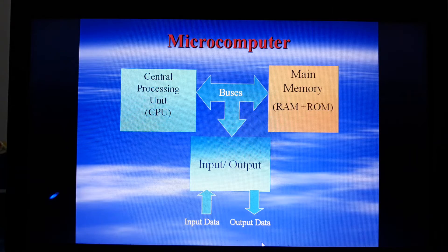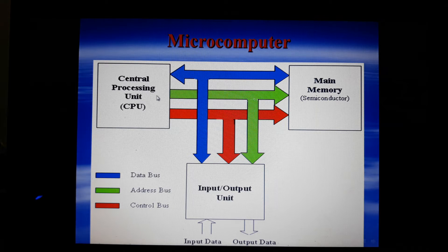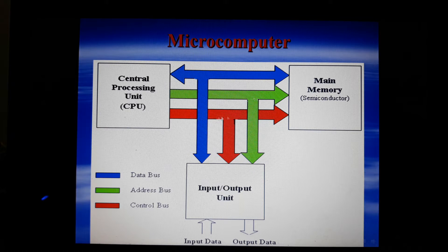All these three units are connected by buses. The buses are of three main types. The data bus carries data from CPU to main memory and from main memory to CPU; it also carries data between the CPU and the input/output unit. The second bus is the address bus, which carries addresses to address memory locations or input/output ports. The control bus carries control signals from the CPU to both main memory and the input/output unit.